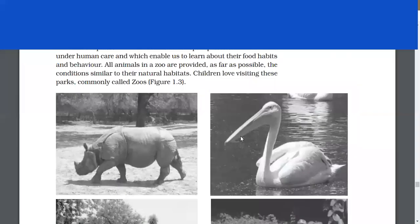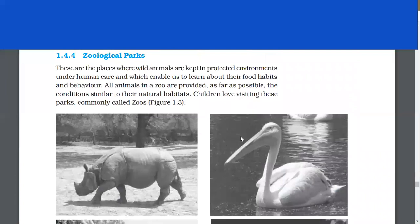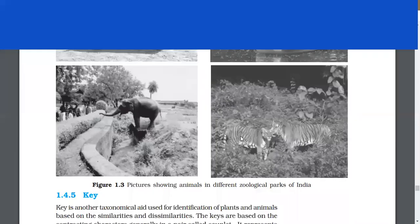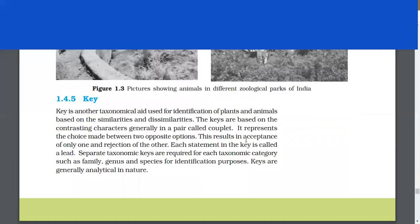Zoological parks. These are the places where wild animals are kept in protected environments under human care and which enable us to learn about their food habits and behavior. All animals in a zoo are provided, as far as possible, the conditions similar to their natural habitats. Children love visiting these parks commonly called zoos.